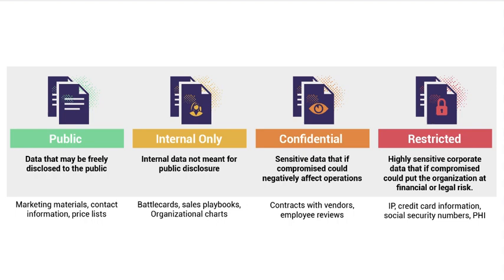For example, data can be public, which means the information is freely disclosed to the public, like marketing materials, price lists — everything that is on the internet. There is also private data, which is internal only and confidential — it is sensitive data that if compromised could negatively affect operations. And there is restricted data, the highest level of sensitivity, where if compromised it could put the organization at financial or legal risk — like IP addresses, credit card information, social security numbers, etc.